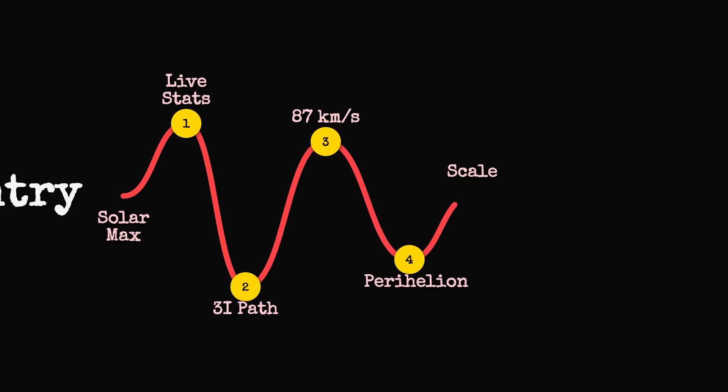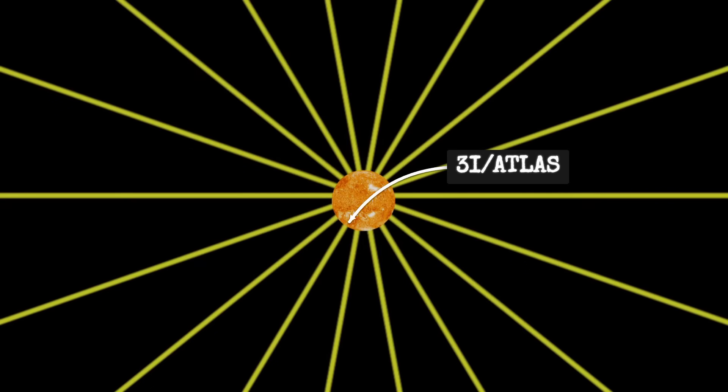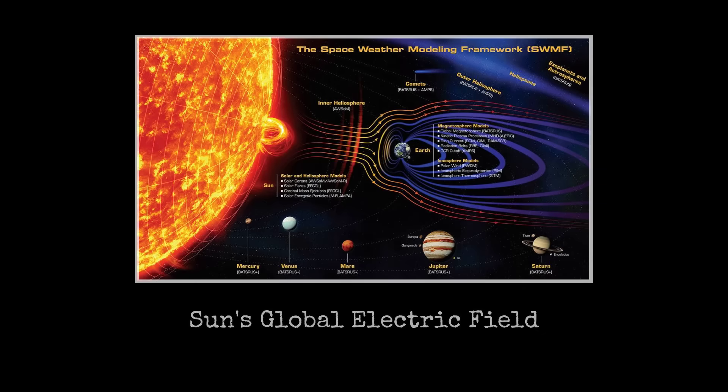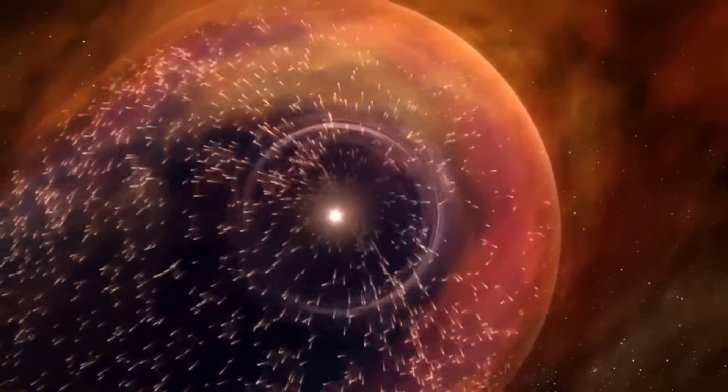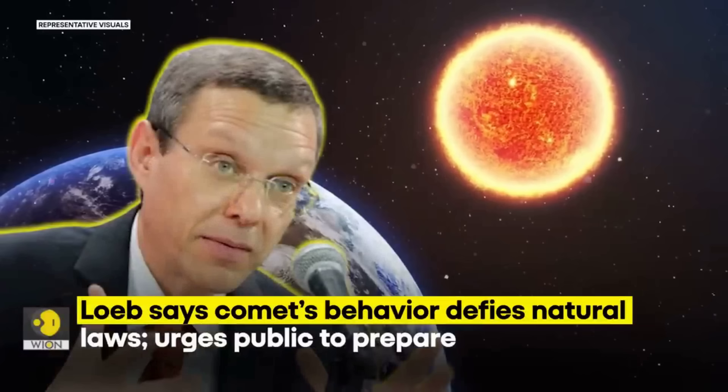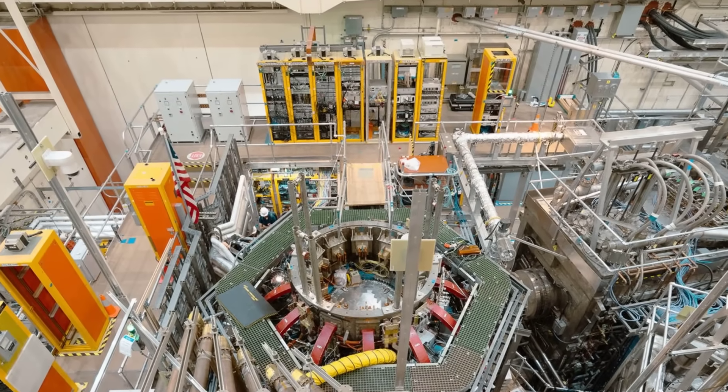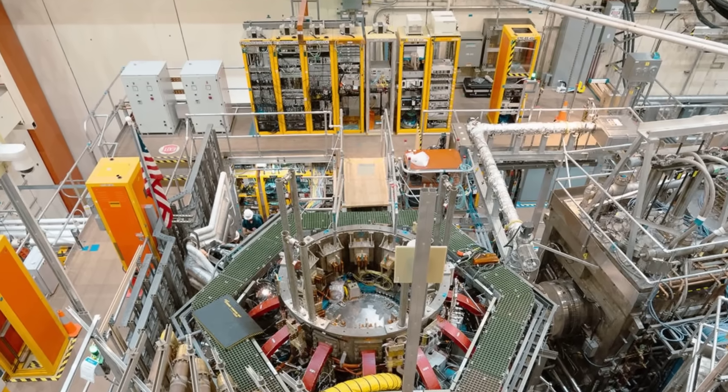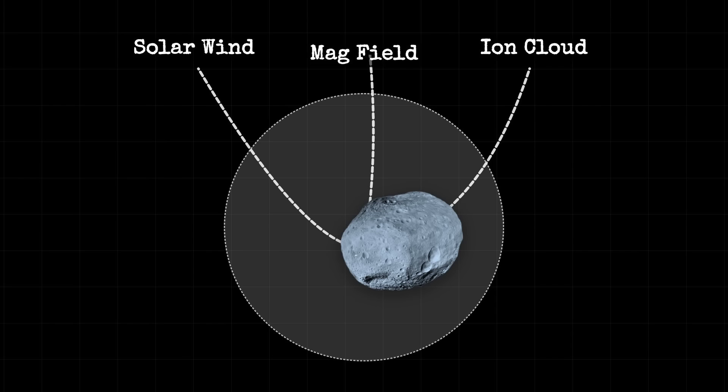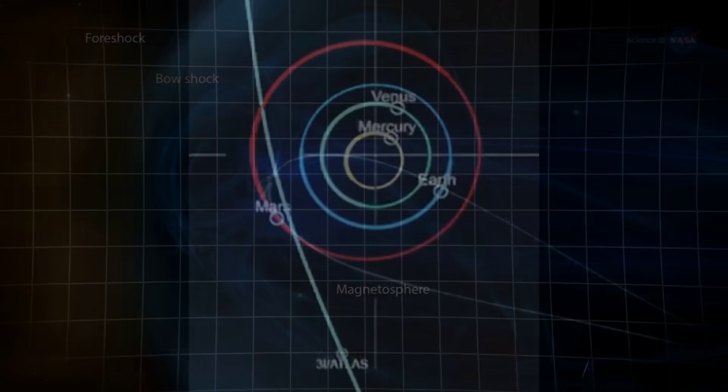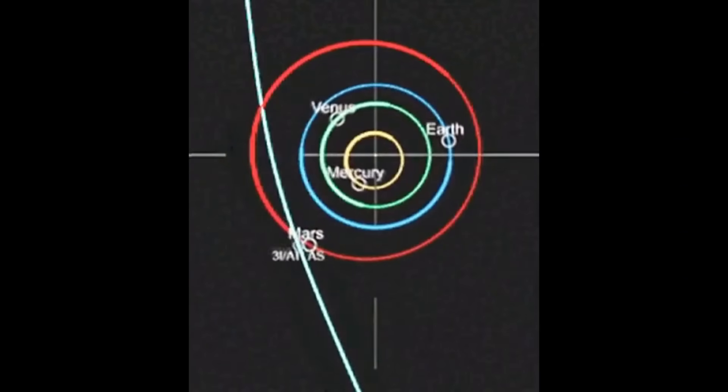When 3I/Atlas passes through perihelion, it's not just interacting with solar radiation, it's embedded in this complex electromagnetic environment. The sun generates an electric field that extends throughout the heliosphere, and this field is particularly strong near the sun. Some researchers have proposed that comets and interstellar objects might interact with this electric field in ways we don't fully understand yet. From a plasma physics perspective, 3I/Atlas is essentially a moving node in the solar system's electromagnetic circuit. It's carrying charge, it's surrounded by ionized gas, and it's traveling at high speed through the sun's magnetic field.